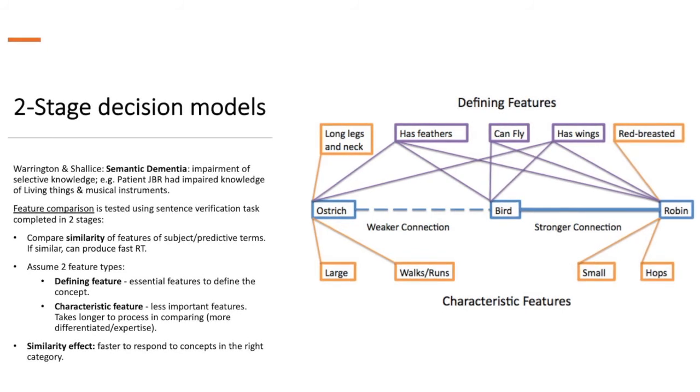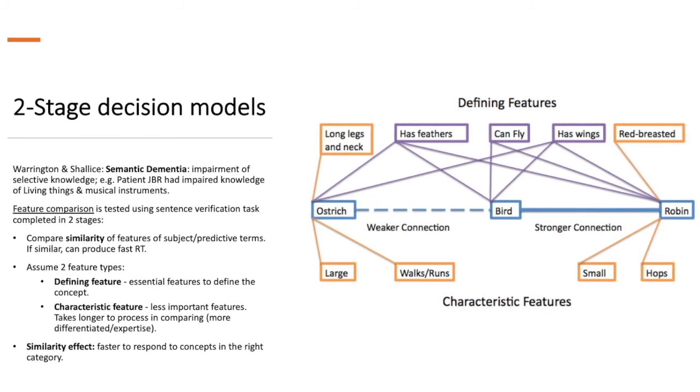While ostriches, on the other hand, they have long legs and necks. They walk and run as opposed to fly, and they're pretty large birds. So you can see the development of these theories in how they're trying to explain how semantic memory works.